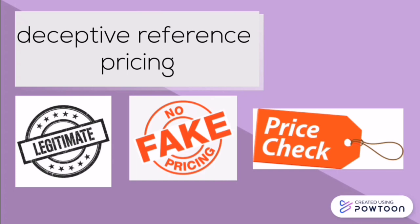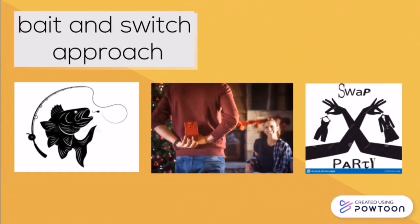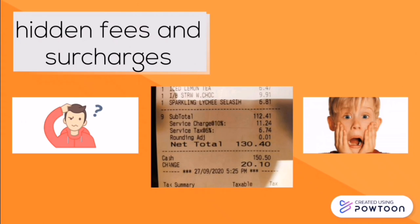If the reference price is legitimate, the advertisement is considered informative. The next deceptive practice is the bait-and-switch approach, where sellers advertise products at a cheap price to attract customers, but when customers arrive they will not sell the product. Instead, sellers will claim the stock is finished and will sell a similar product at a higher price. Hidden fees and surcharges are fees not shown on the displayed price of a product — unexpected fees applied to buyers when purchasing, only realized when checking the payment statement.